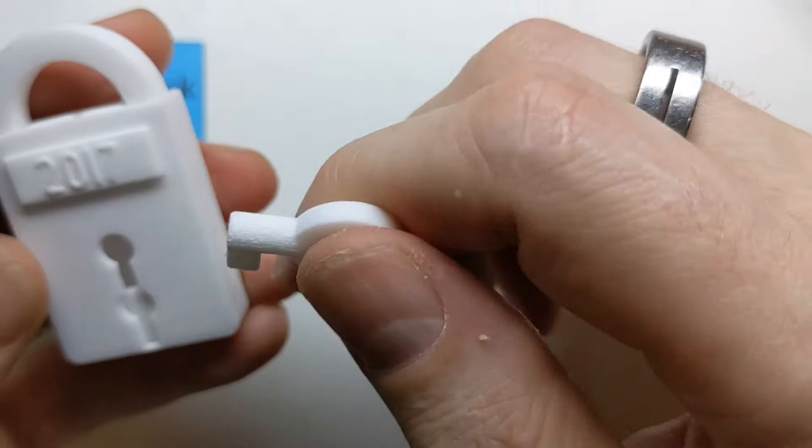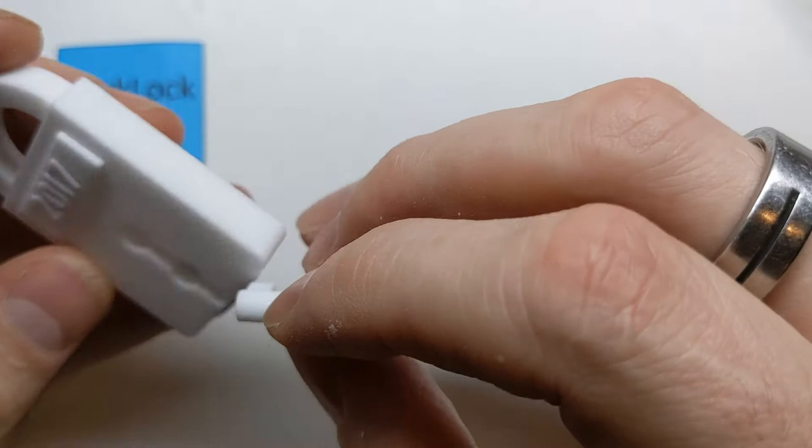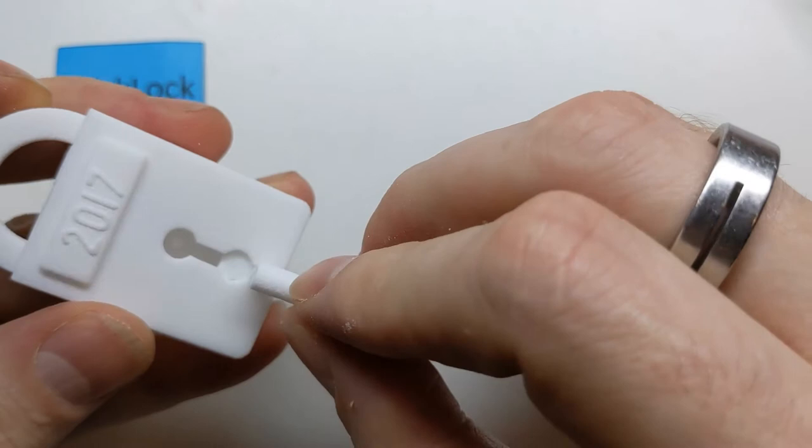Now there's also this piece here. I wonder if the real lock is underneath this keyhole, and you have to get this piece, this shield to move away before you can get into it.